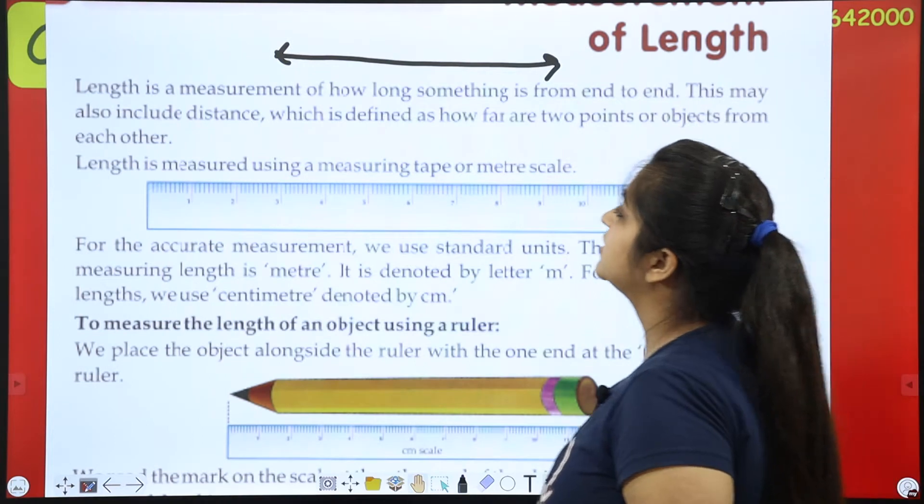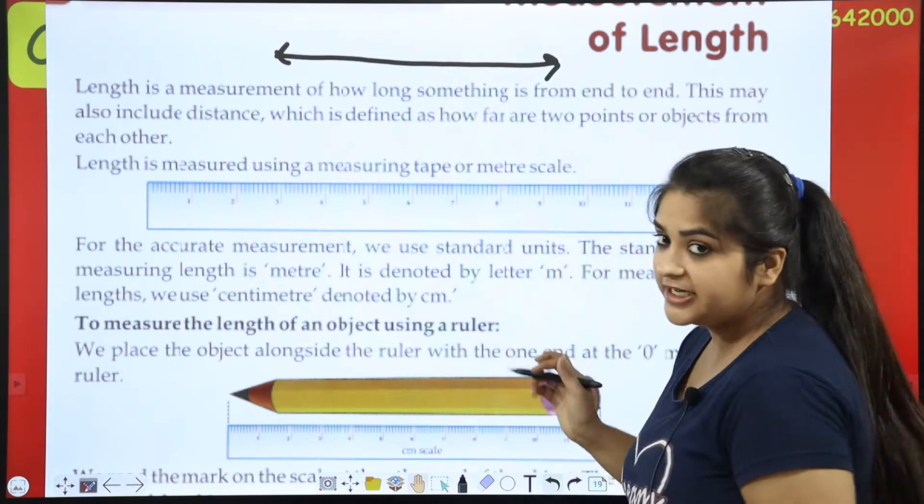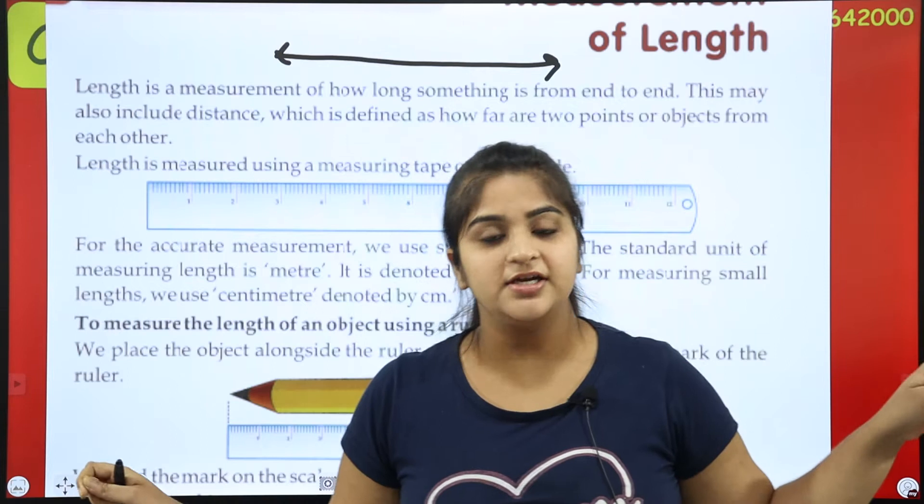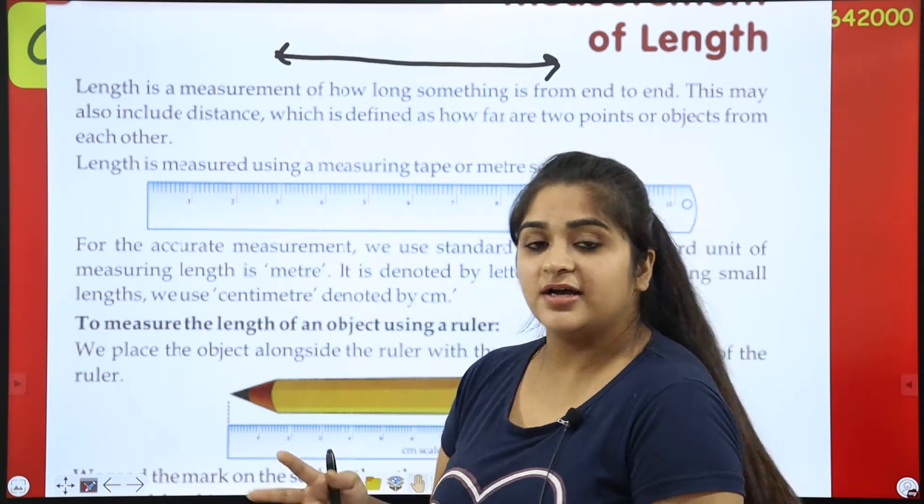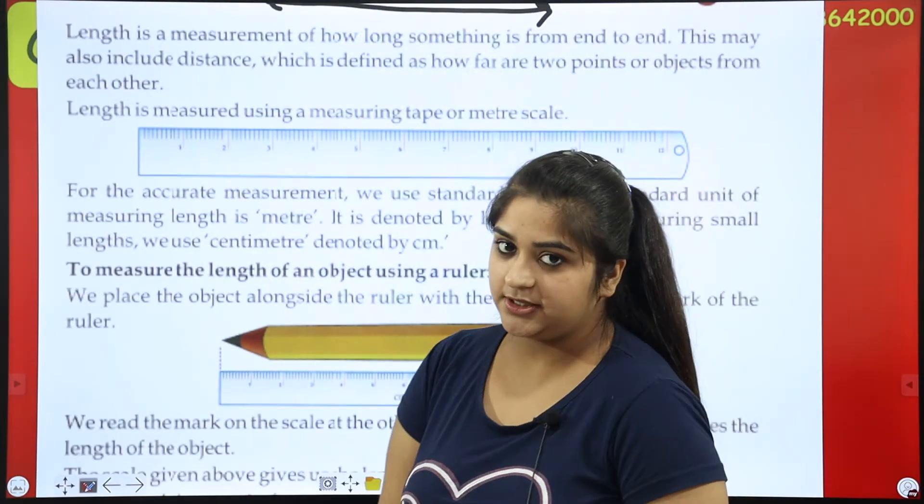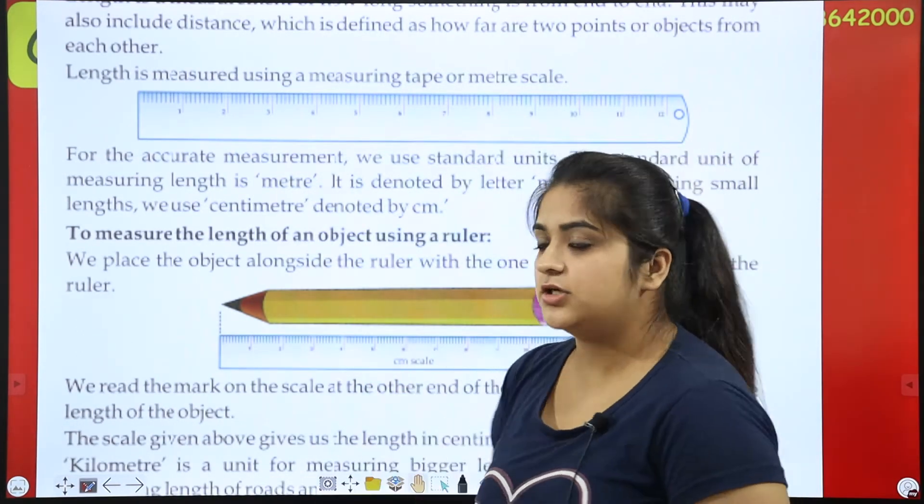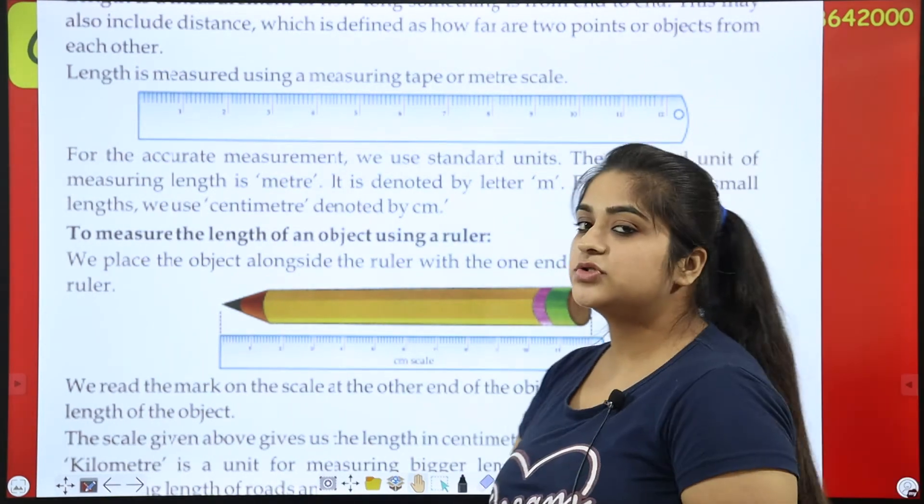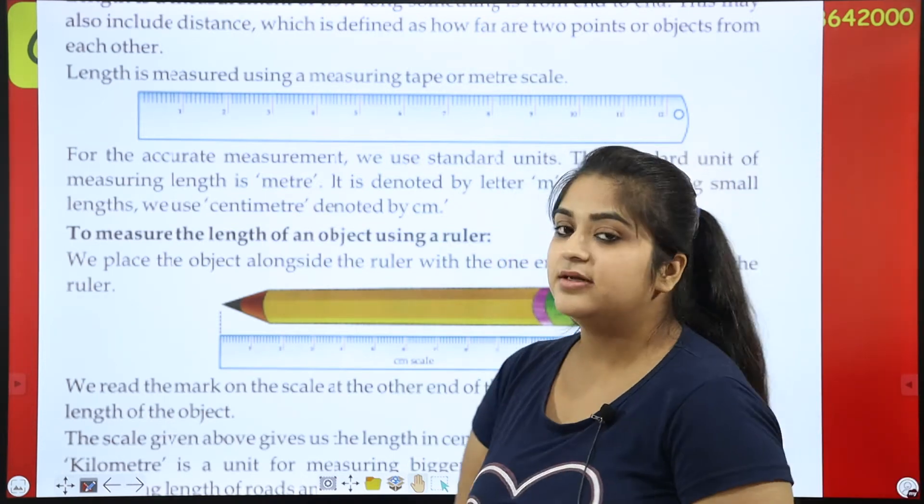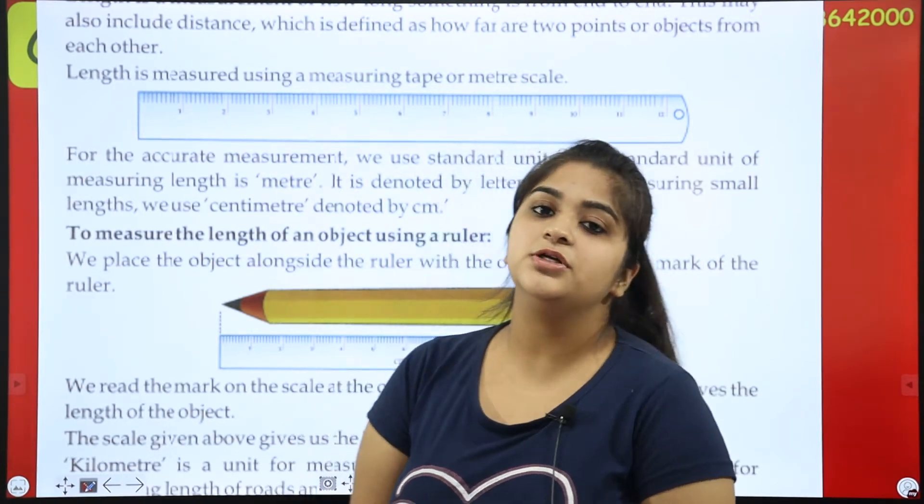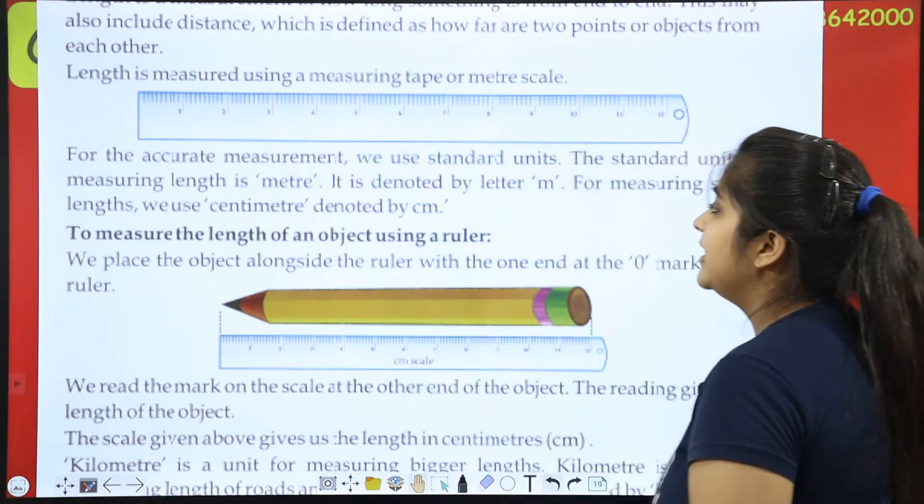Length is measured using a measuring tape or meter scale. How much length can be measured? Measuring tape. If you don't understand cello tape or glitter tape, you can measure with a tape. Or a meter scale. It feels like it's distance. It can be measured from these things. For the accurate measurement, we need a good accurate measurement. We use standard units. The standard unit of measuring length is meter. If we don't have any length, we use meter. Our standard unit is meter. It is denoted by letter M.